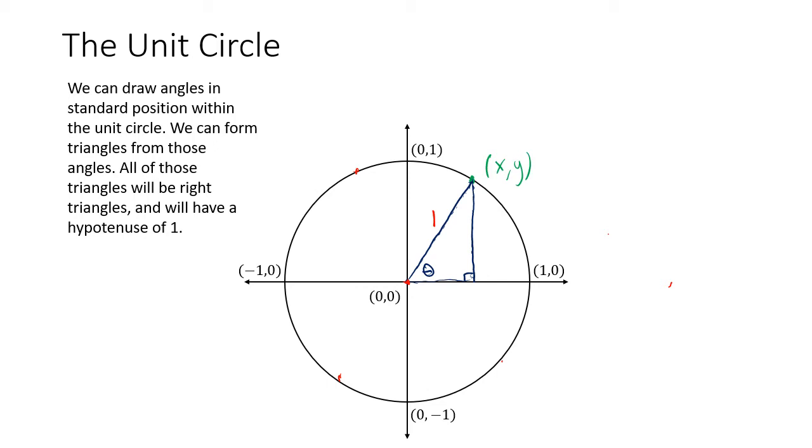That's kind of neat, because we have the Pythagorean theorem. The Pythagorean theorem tells us that if this is x, then this is x, and if this is y, then this is y. And we know that the relationship between the side lengths of this triangle...